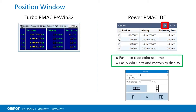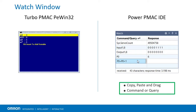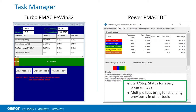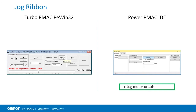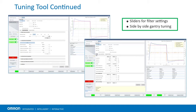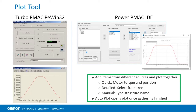Click on the gear icon to change settings. The Watch window is now much easier to use. Double-click an empty row or current variable name to edit. Rows can also be changed to a button that sends a command when pressed. The Task Manager now has multiple tabs to view CPU information, CPU usage, and what tasks are currently running. Some tabs bring in functionality previously in other tools such as starting and stopping programs. The Jog Ribbon now has a Jog Axis feature, which could, for example, move only the x-axis on a system with kinematics. The Tuning tool now shows motor status as well as better stat calculations and allows a continuous live tune. There are also sliders for easier filter setup and a side-by-side gantry tune. The Plotting tool is now considerably easier to use.